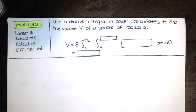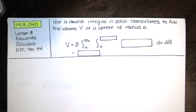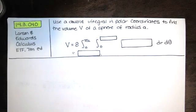In this video, we solve problem 14.3.040 from Larson and Edwards' Calculus Early Transcendental Functions text, 7th edition. We're asked to use a double integral in polar coordinates to find the volume V of a sphere of radius A.